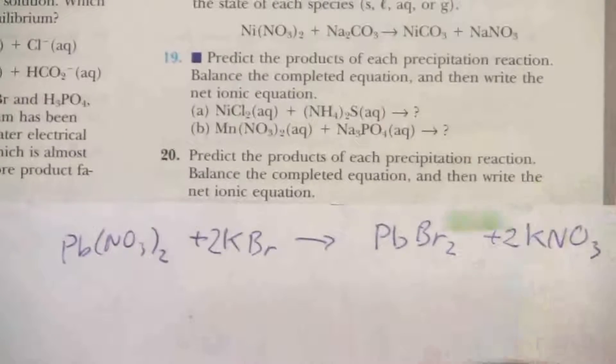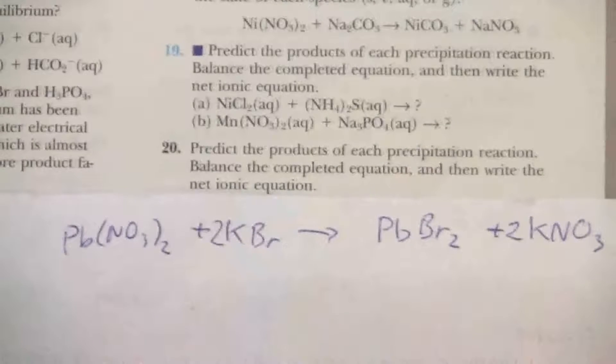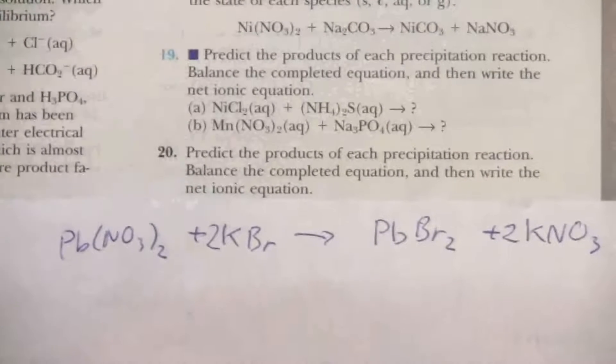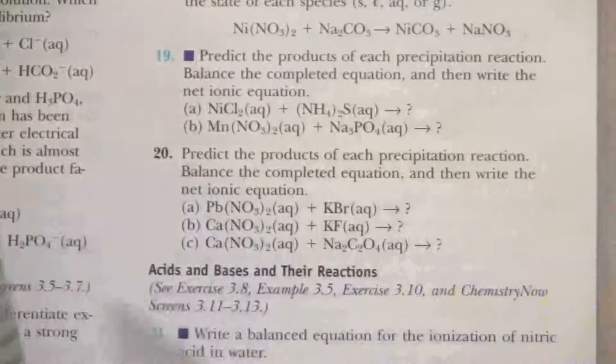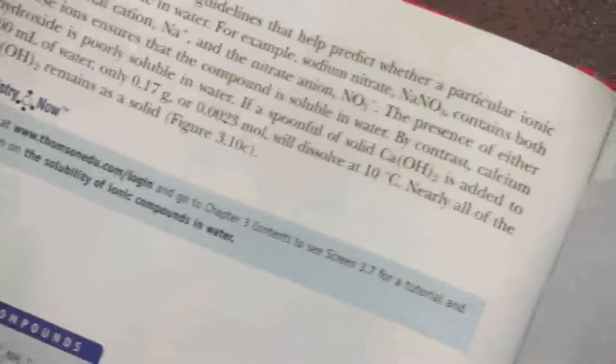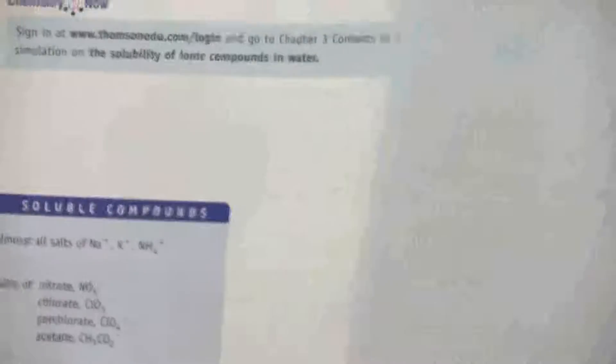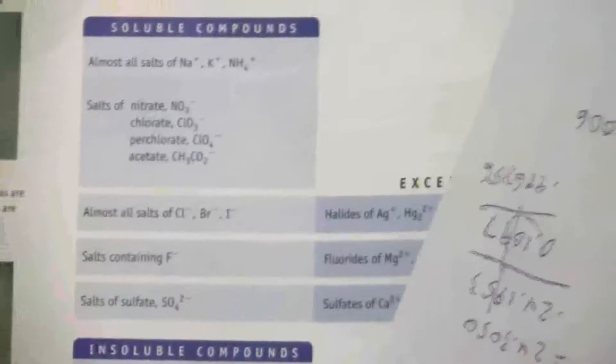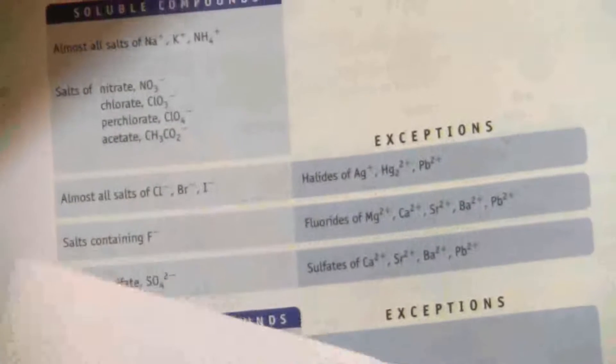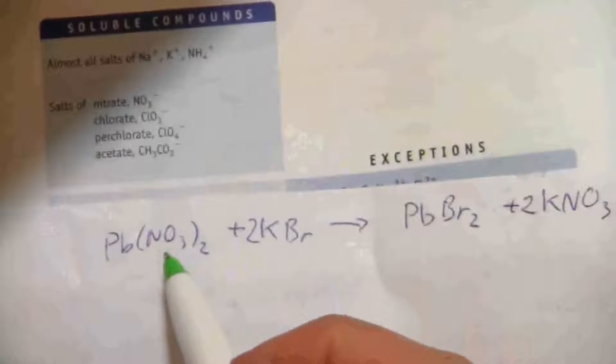We want to write the net ionic equation. So what we need to know in order to find the net ionic equation is we need to know what is soluble and what is insoluble. So that's where we will consult the solubility rules, if I can bring them into focus here. So here are our solubility rules, and I think what might be the easiest is to just reference these instead of trying to get them in view.